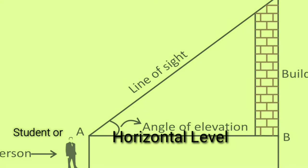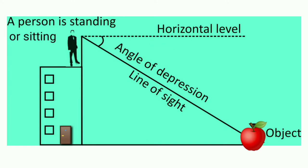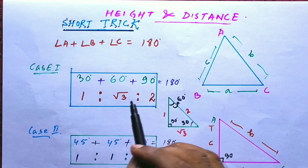That is the case when we raise our head to look at the object. Now consider this figure — anyone sitting on the balcony and looking down at an object. In this case the line of sight is below the horizontal level. The angle formed by the line of sight with the horizontal is called the angle of depression. Thus the angle of depression of a point on the object being viewed is the angle formed by the line of sight with the horizontal when the point is below the horizontal level — that is when we lower our head to look at the point.